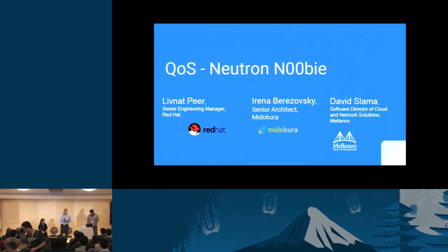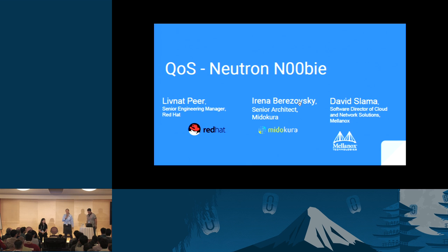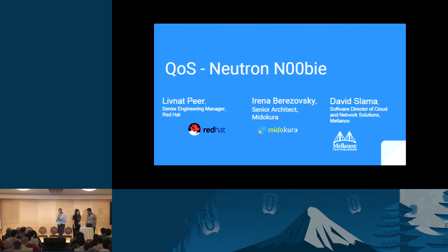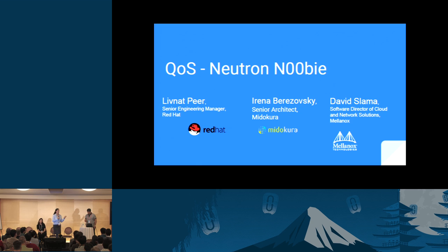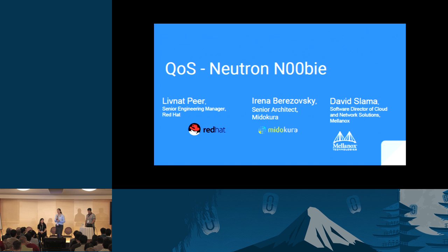Today we'll cover, at a high level, the changes and the workflow introduced in order to use quality of service, the API level changes, and a bit of the detailed implementation. We're going to cover a short real-life customer use case and a future roadmap, and hopefully we'll get to show you some demo as well.